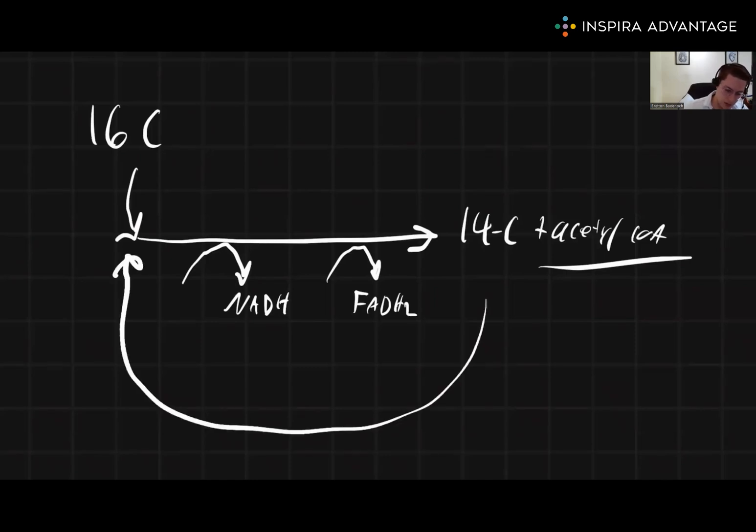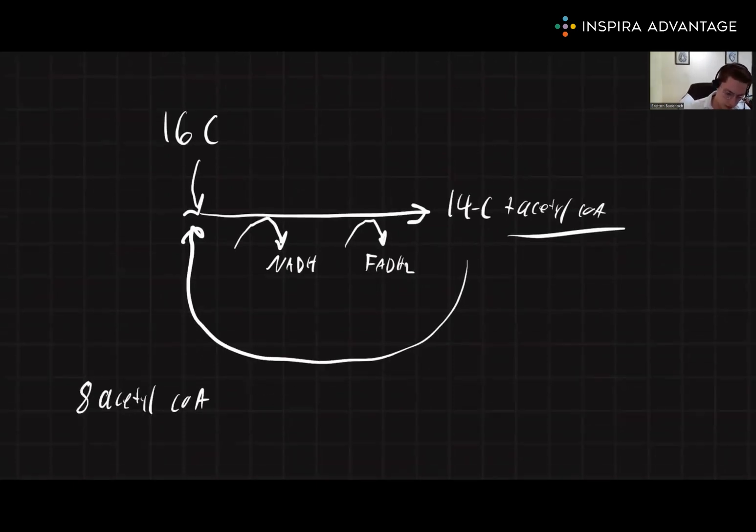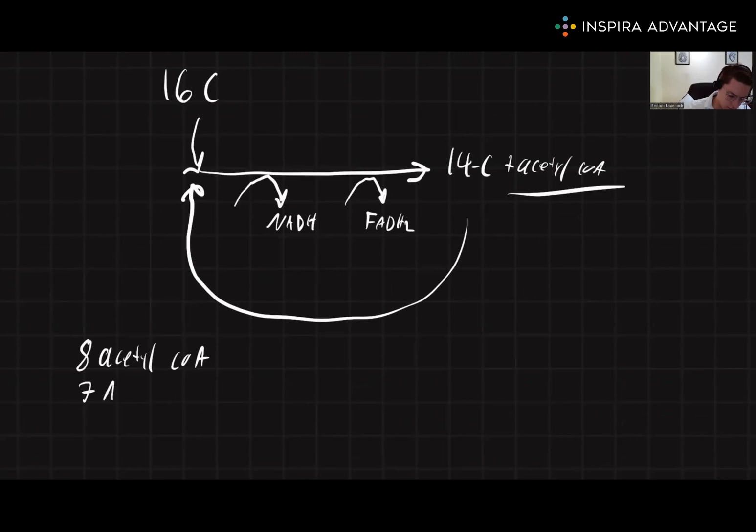And this is going to feed back around, continuing to product us down. Okay, so for our net products, then, we're going to have eight acetyl-CoA. We're going to have seven NADH. We're going to have seven FADH2.